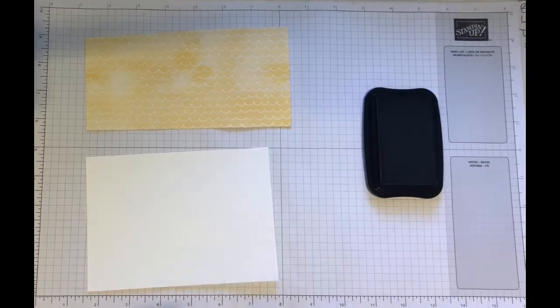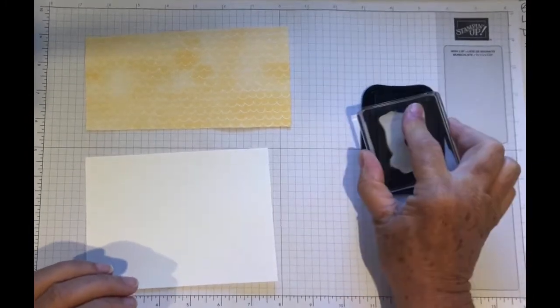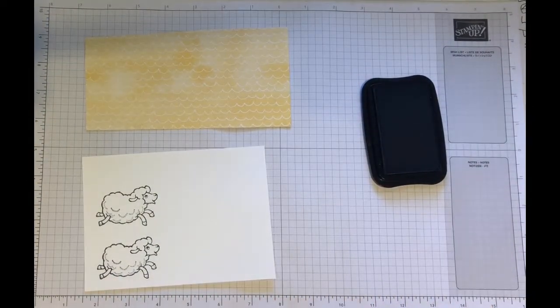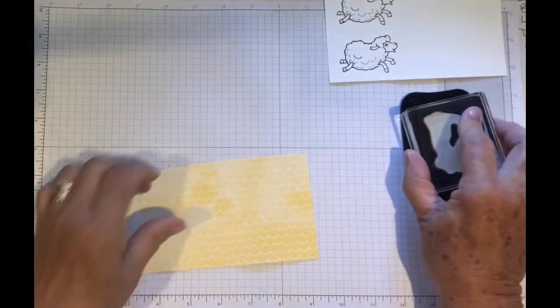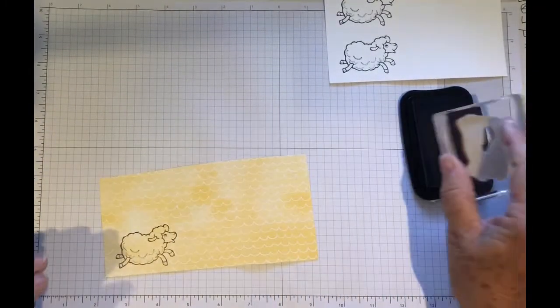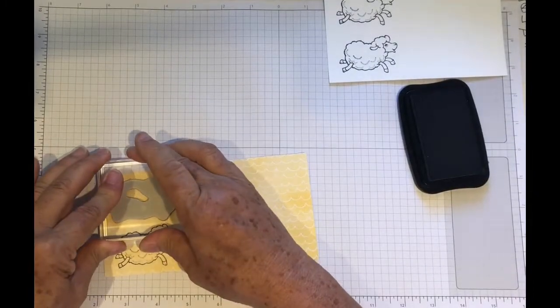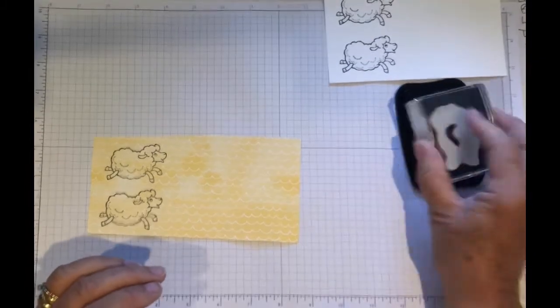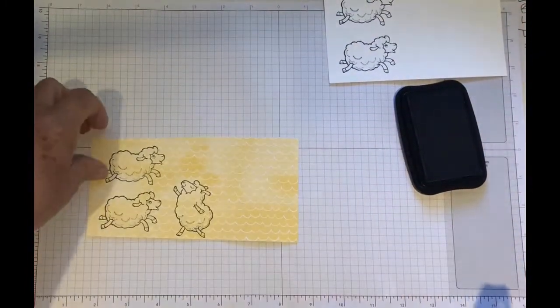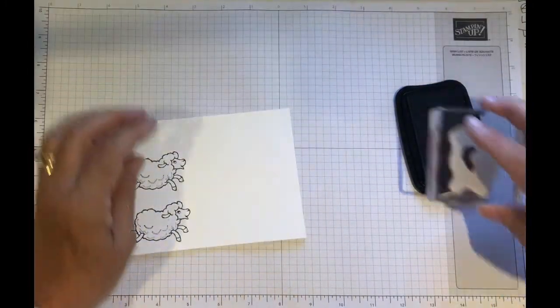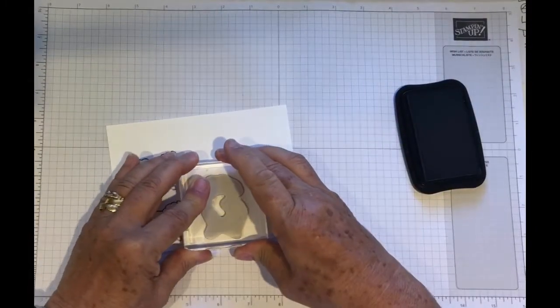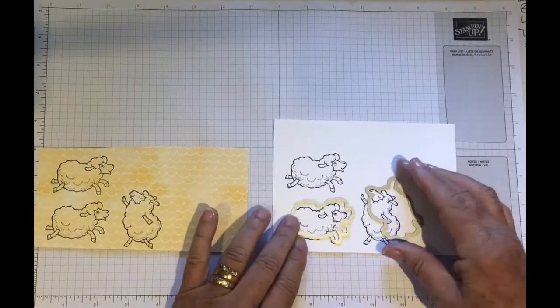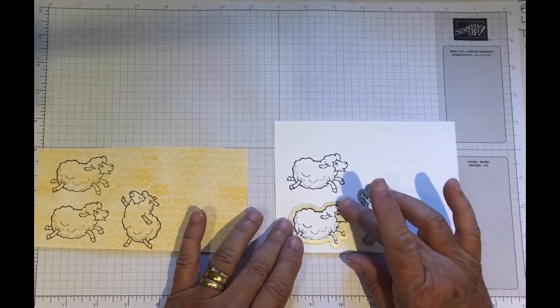So we're going to start with stamping the sheep. I'm using Memento black ink and we're going to ink the stamp up and stamp on white cardstock. We need two of the jumping sheep, while they're jumping over the hedge. And the designer series paper here is from the Hamp End and it's got little white loops, but I actually thought they looked a bit like woolly, little woolly sheep. And then we need the monster of the pack. And we also need him in white as well. So now we just need to add the dies and die cut each one out of both the white and the designer series paper and I'll be back shortly.